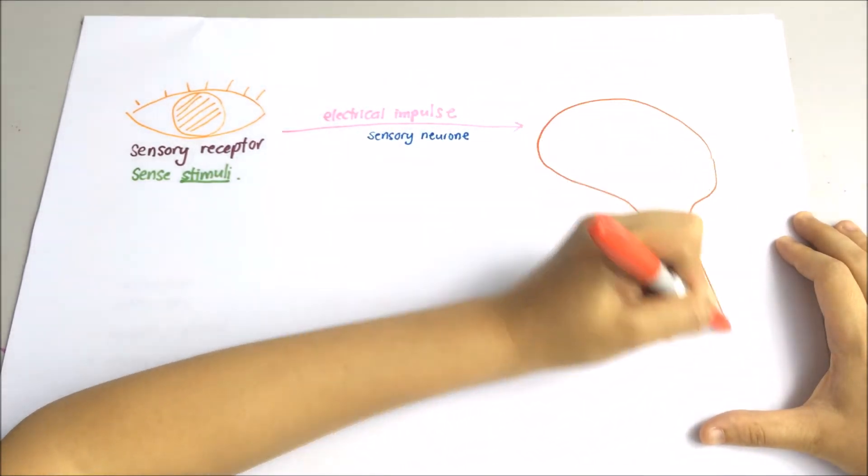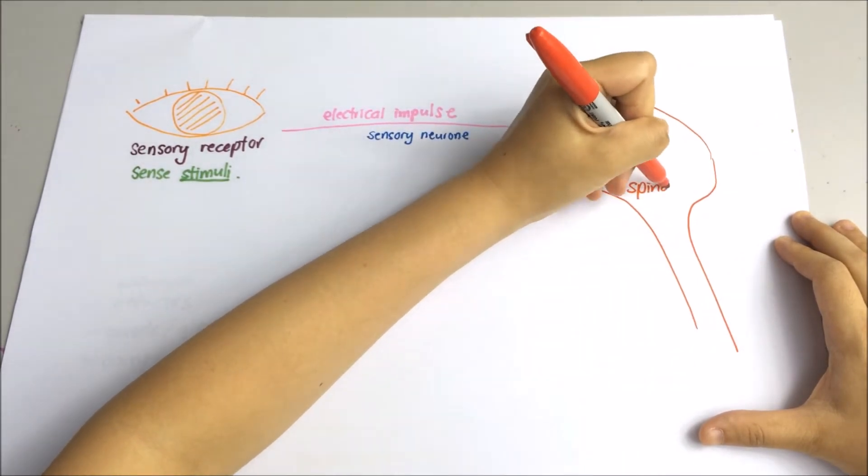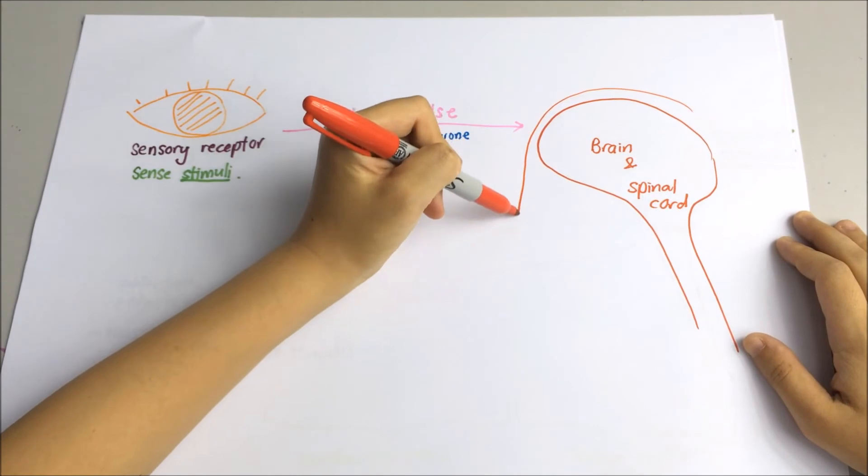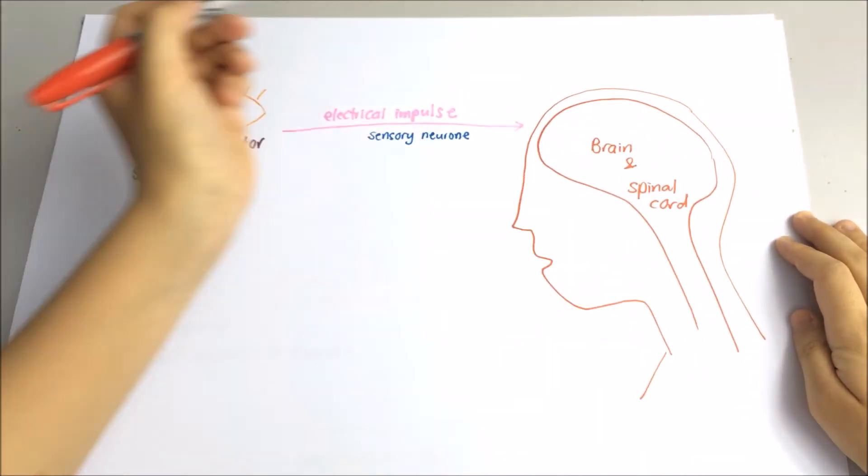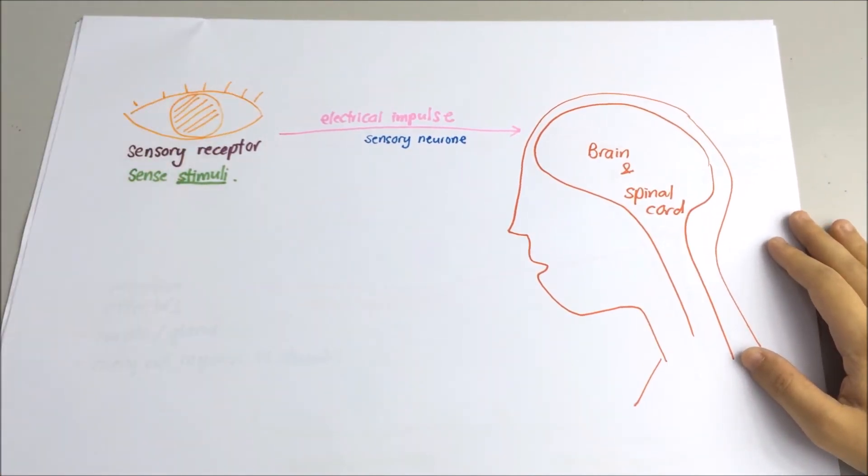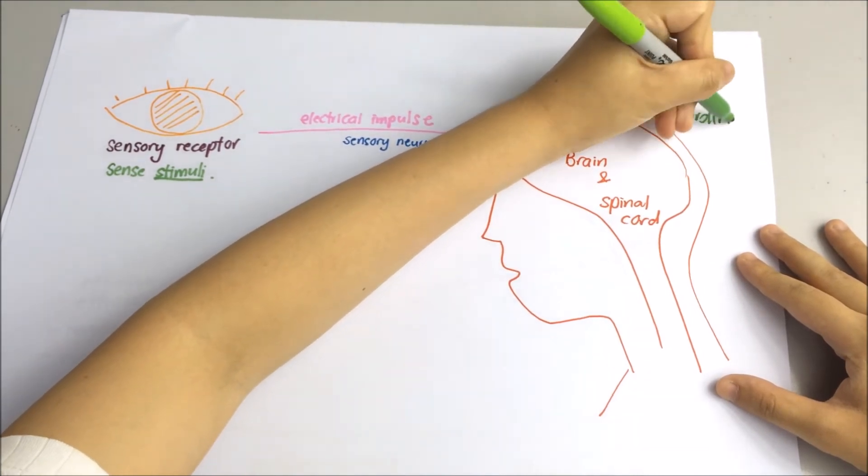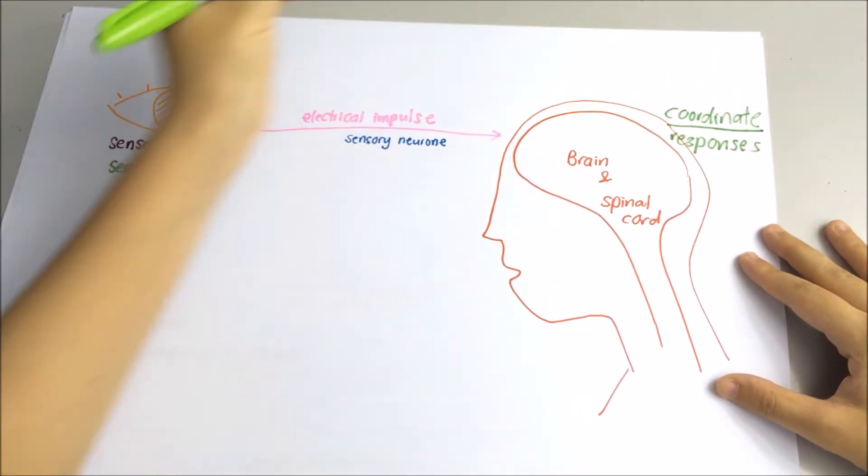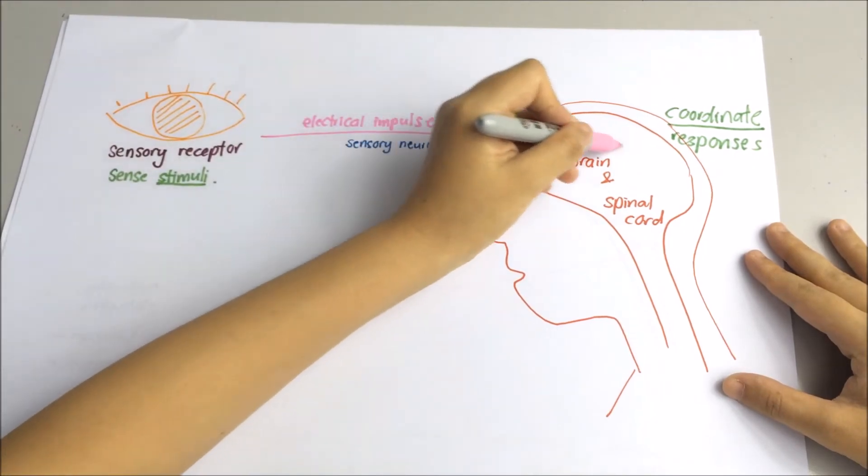This is our central nervous system, which consists of the brain and spinal cord. The central nervous system processes the electrical impulses and coordinates the response. The key word here is to coordinate the response.